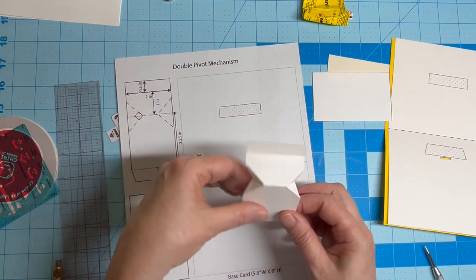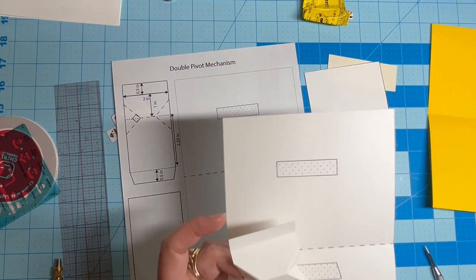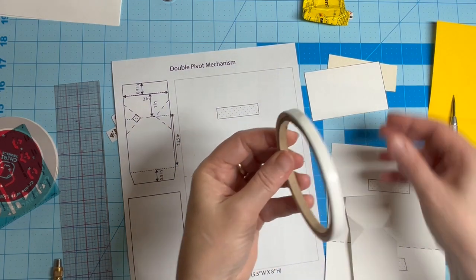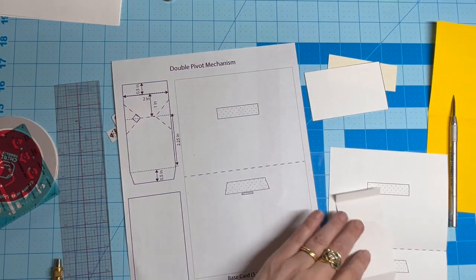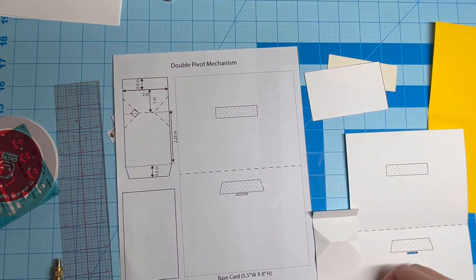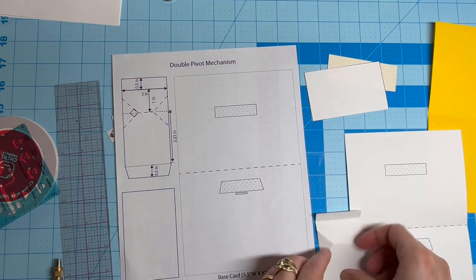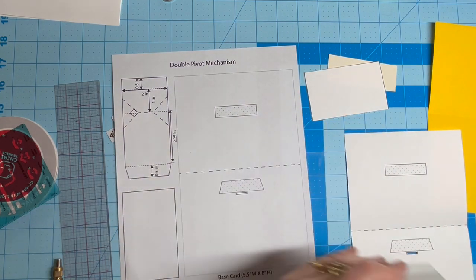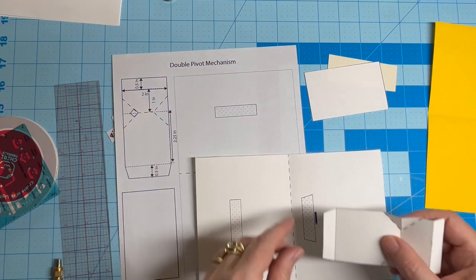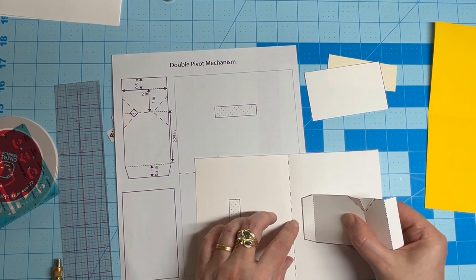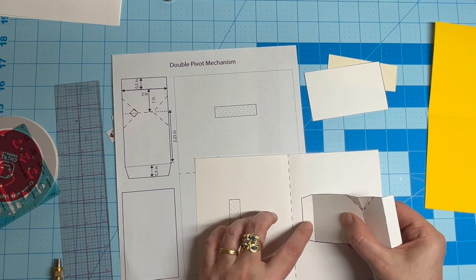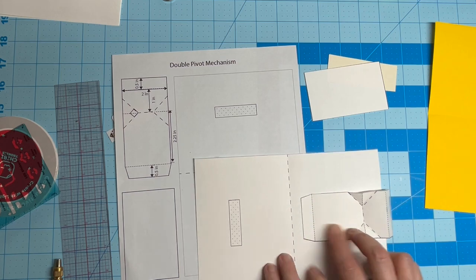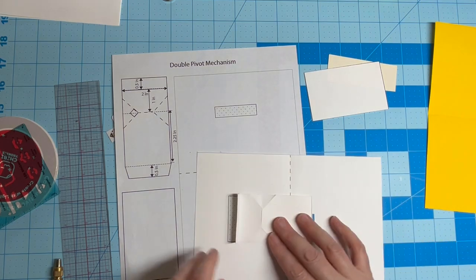Using an adhesive of your choice, I'm using double-sided tape. Adhere the bottom-most glue tab adjacent to the slot you cut in the base card. It should not be covered. Ensure that the mechanism is parallel with the crease.